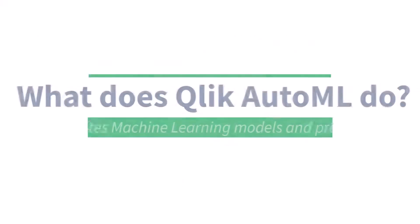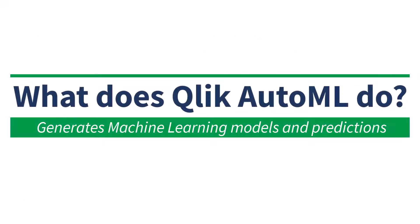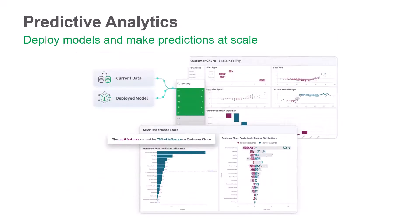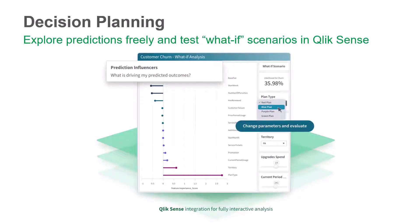What does Qlik AutoML do? Qlik AutoML generates machine learning models from historical data which can be used to make predictions on current data with full explainability. You can further explore these predictive analytics and get real-time calculations in Qlik Sense apps by making interactive selections and testing what-if scenarios with our advanced analytics capabilities.